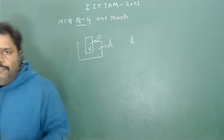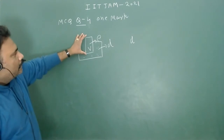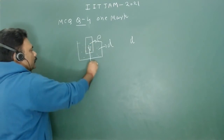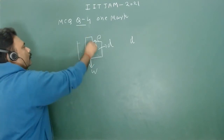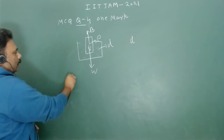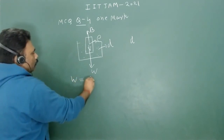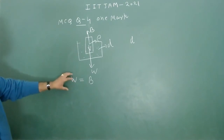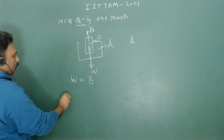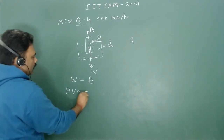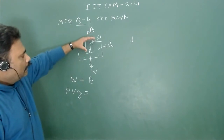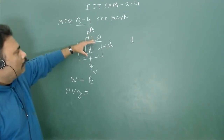This object is maintaining equilibrium, which means the weight is balanced by the buoyancy force. Since weight equals buoyancy force, the weight can be written in terms of density as rho times V times g.